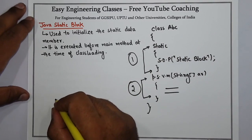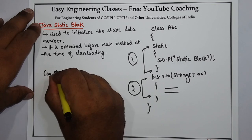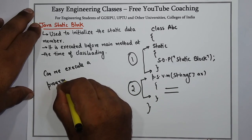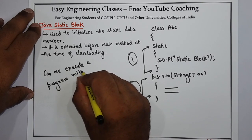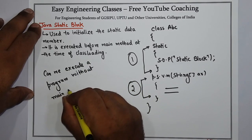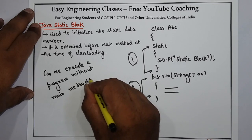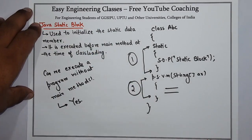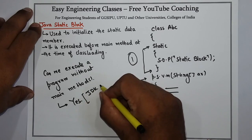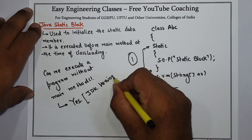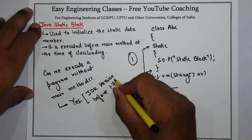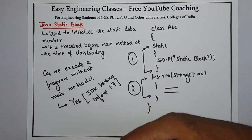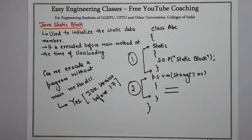So if there is a question — can we execute a Java program without main method? The answer is yes, you can do it with the use of a static block. But this applies only for JDK versions before 1.7. In JDK versions before 1.7, we can execute a Java program without main method with the use of Java static blocks.